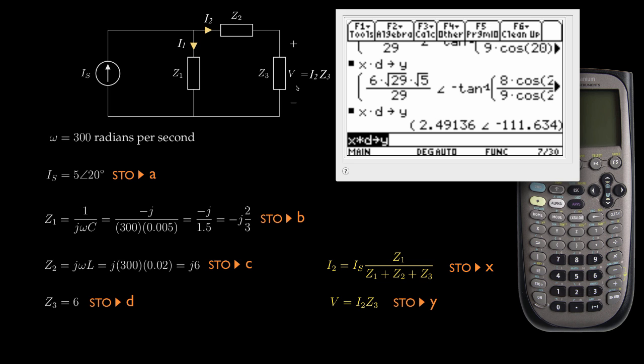Perhaps I might write this voltage as 2.5 times the cosine of 300t minus 111.6 degrees—perhaps if I wanted one digit past the decimal on the phase and perhaps one digit past the decimal on the amplitude.